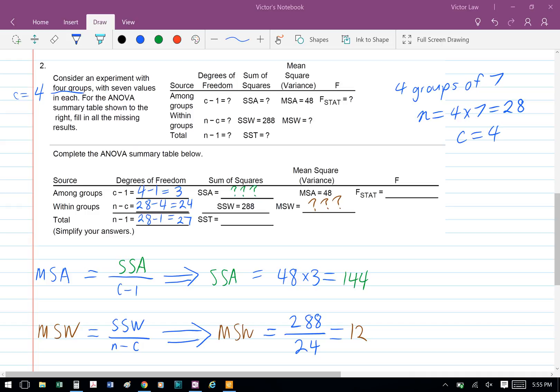And for the MSW, we have MSW equals SSW divided by n minus c. So our MSW equals 288 divided by 24, which equals 12. Afterward we can find the SST, which equals SSA plus SSW, so we have 144 plus 288, which equals 432.